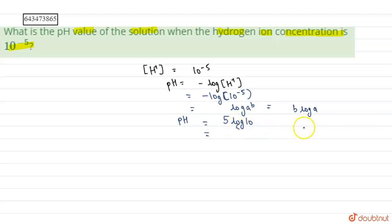Since log 10 is 1, we get pH equals 5 times 1, that is 5.